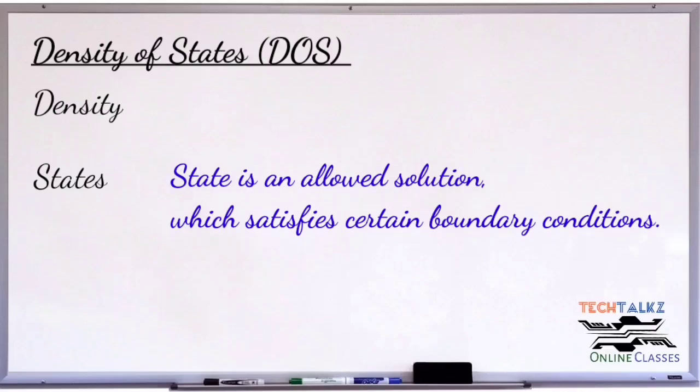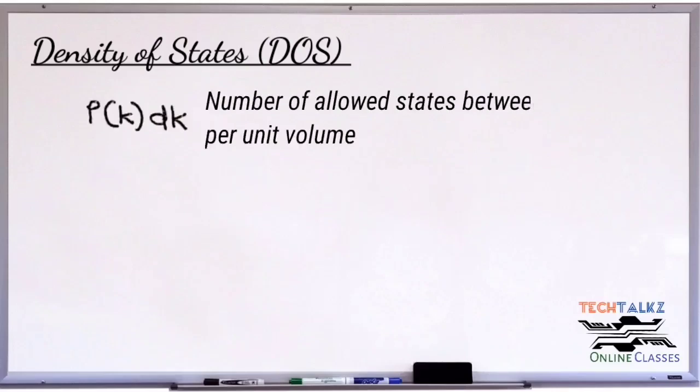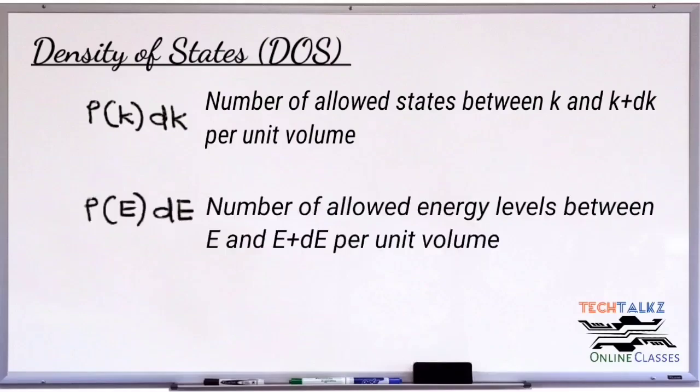Here, we are referring to the density of states in semiconductors, which is rho in terms of k or energy E. Rho k is the number of allowed states between k and k plus dk per unit volume of the material, where k is the vector space. Similarly, rho E is the number of allowed states between E and E plus dE per unit volume of the material.